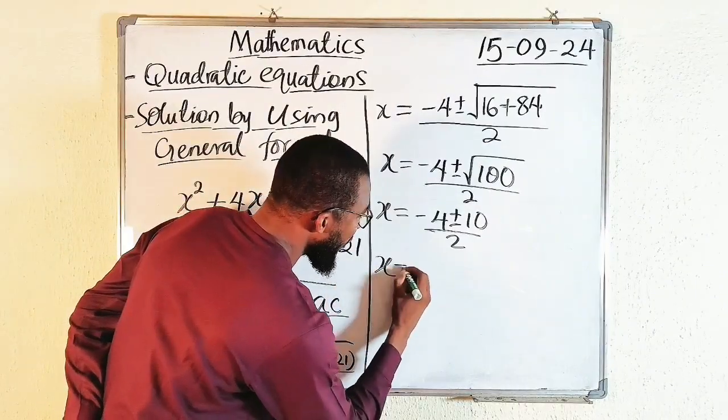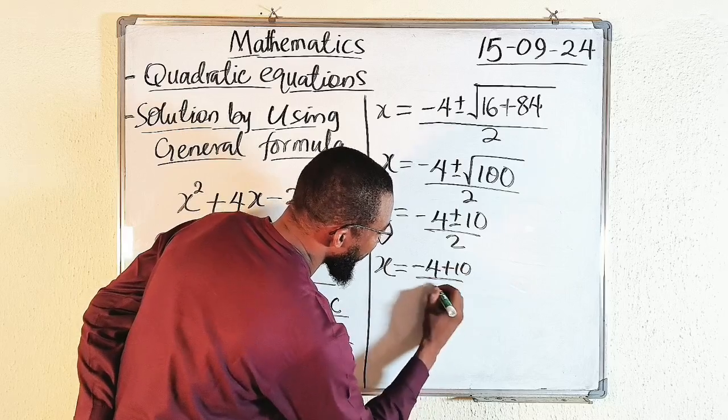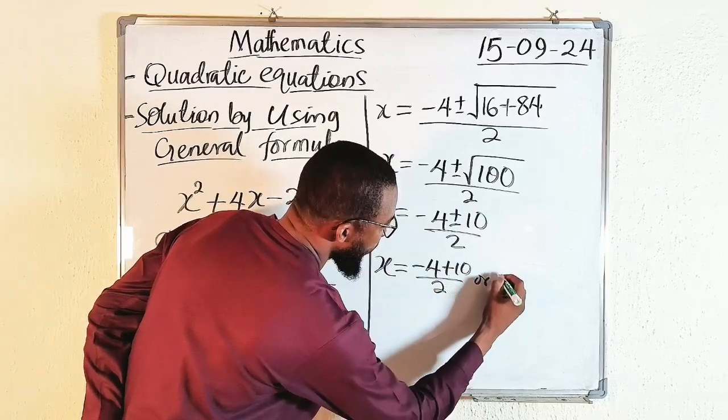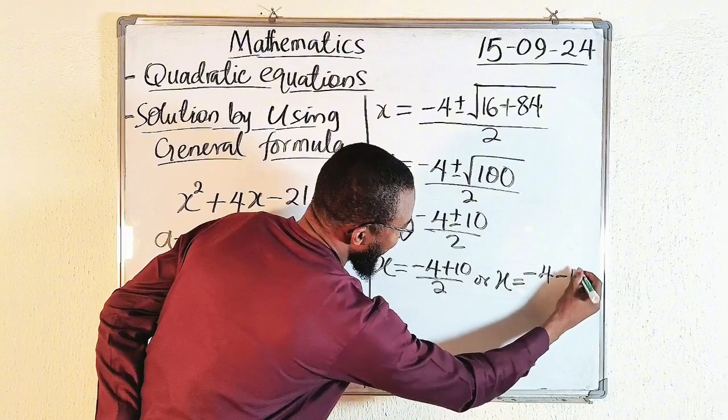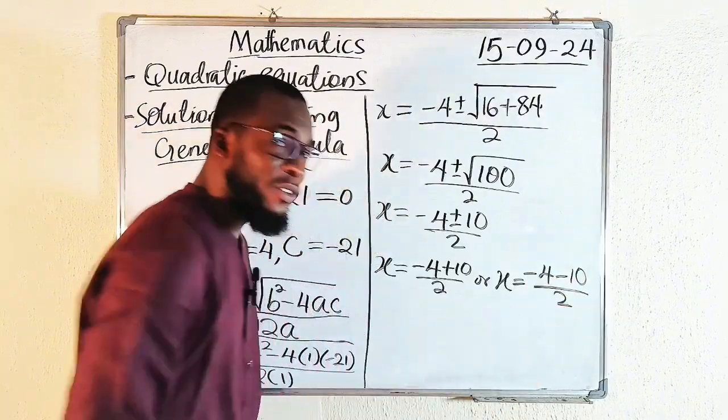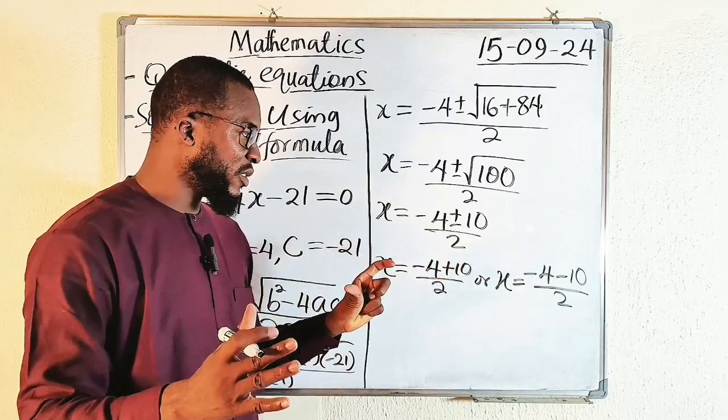x could either be equal to minus 4 plus 10 divided by 2, or x equal to minus 4 minus 10 divided by 2. You should use this plus or minus to split the two values.